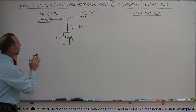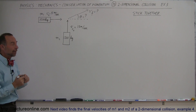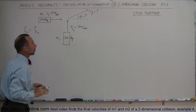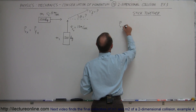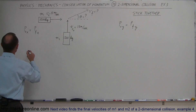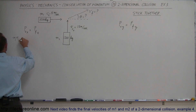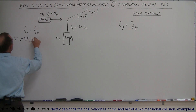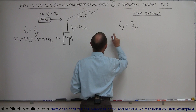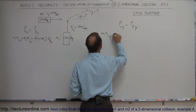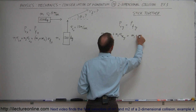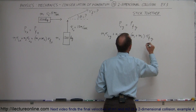We can do that by using the conservation of momentum both in the x direction and in the y direction separately. We can say that p-initial in the x direction must equal p-final in the x direction, and likewise p-initial in the y direction must equal p-final in the y direction. So our general equation will be: m1·v1_initial_x plus m2·v2_initial_x equals (m1 + m2)·v_final_x, and we can do the same for the y direction.